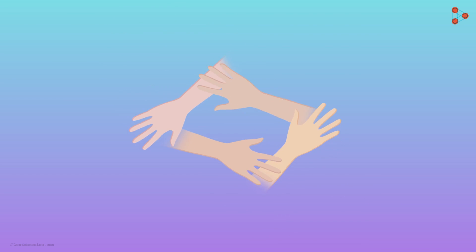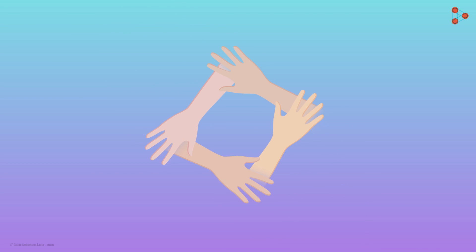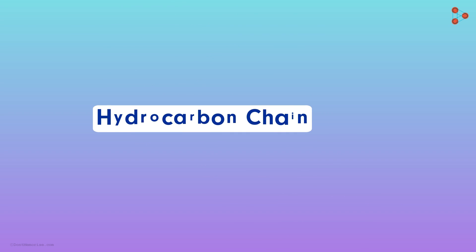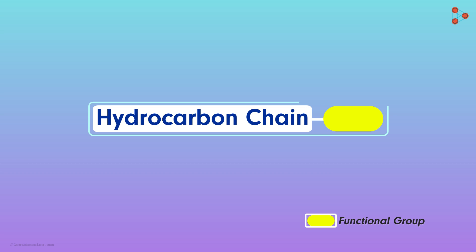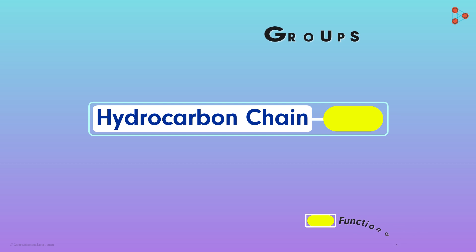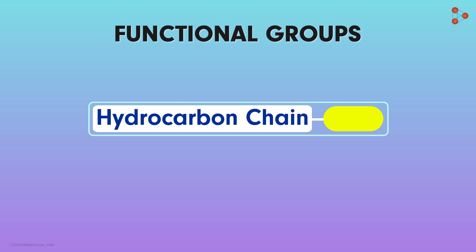We all love the company of our favourite people. Similarly, hydrocarbon chains are also fond of other molecules. They get bonded so strongly that the properties of the compound change depending on the molecules attached. And what are these groups of molecules referred to as? They are called functional groups. Let's get to know about them.